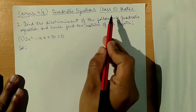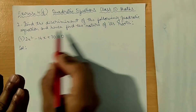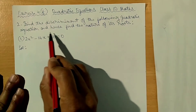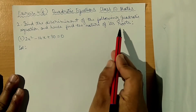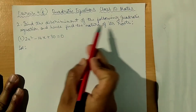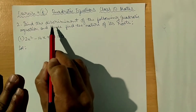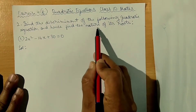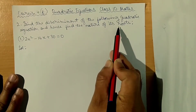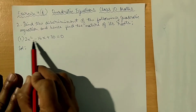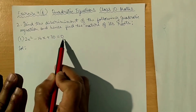XS 4F Quadratic Equations, Class 10 Maths. Find the discriminant of the following quadratic equation and hence find the nature of its roots. Question 1: 2x² minus 16x plus 30 is equal to 0.